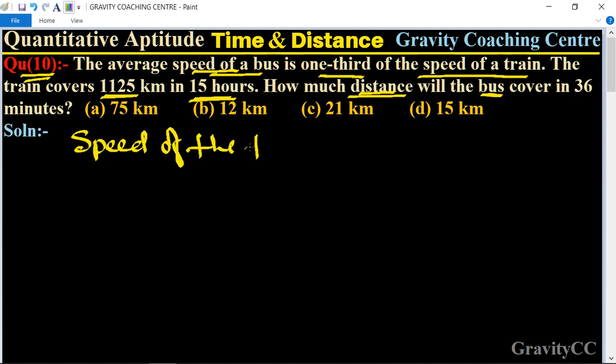Speed of the train equals distance upon time, so 1125 upon 15 kilometers per hour.